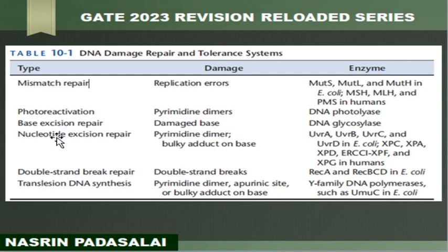Next we will be seeing the DNA damage repair systems — the damage they repair and the enzymes involved. First is mismatch repair: it corrects replication errors, and the enzymes involved include MutS, MutL, and MutH in case of E. coli. In humans, the enzymes include MSH, MLH, and PMS.